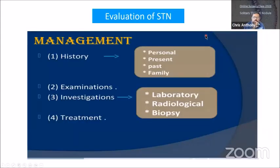How will you manage this patient? First, you have to get a good history: personal history, present history, past history, family history, and history of radiation — all these things are very important. Then you do a thorough clinical examination. Then you go for investigations, which include blood tests, laboratory investigations, thyroid function tests, radiological investigations such as ultrasound, biopsy (FNAC), and finally, treatment.